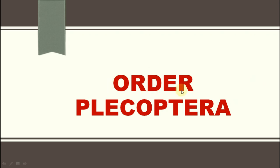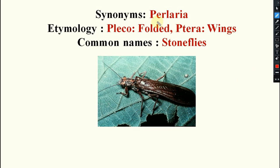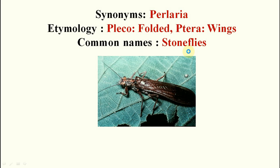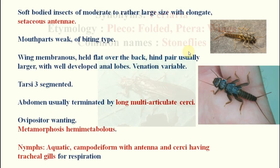The next topic is Order Plecoptera, also known as Plectoptera — not Plecoptera, as Order Plecoptera is a different one. The synonym is Perlaria. 'Pleco' means folded and 'Tera' means wings, so folded wings are present — that's why it is known as Plecoptera. The common name is Stoneflies. This is a very minor order.